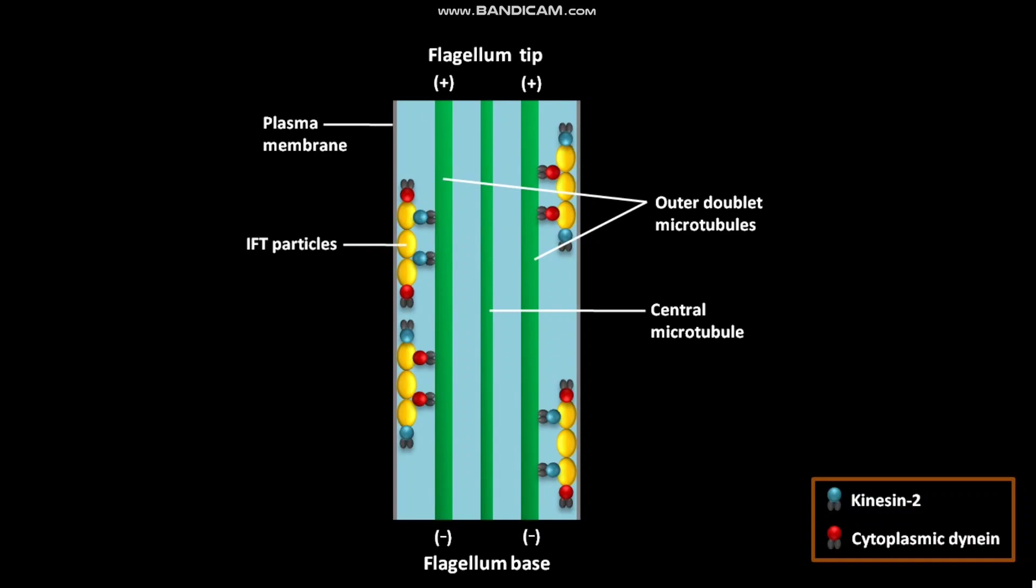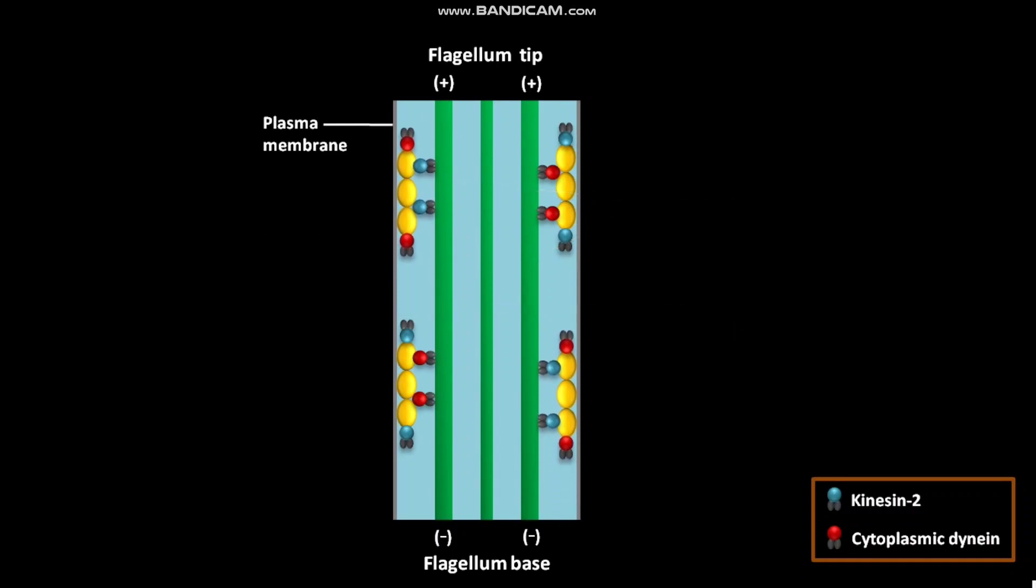IFT particles are transported between the plasma membrane and the outer doublet microtubules. Transport of IFT particles to the tip is dependent on kinesin-2.